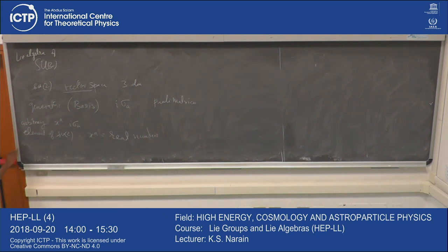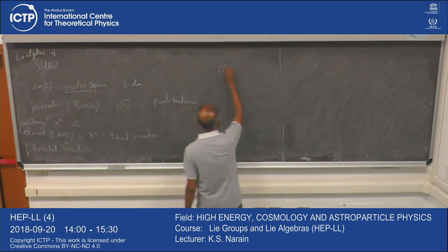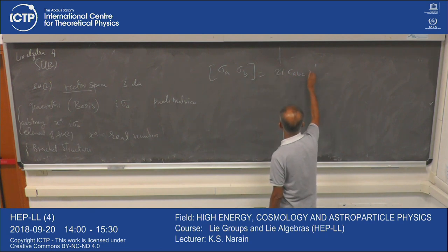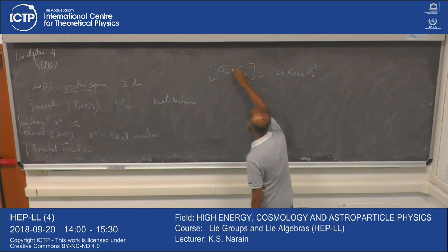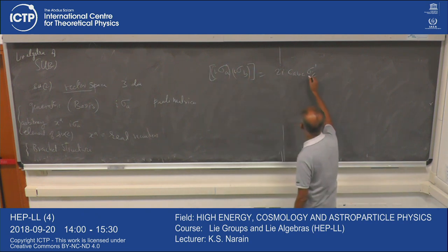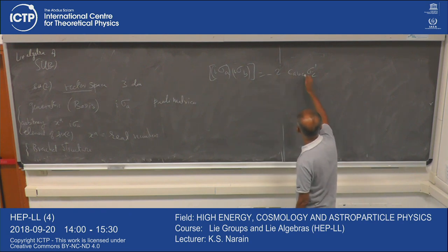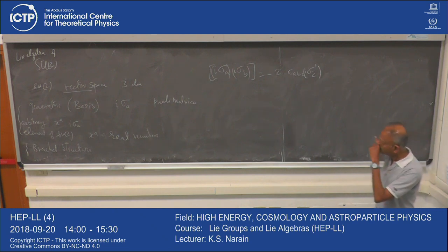Now this was, of course, a vector space. But what was very important was the bracket structure. We saw the bracket structure: [σ_A, σ_B] — the commutator — was 2i ε_{ABC} σ_C. If you put i's in front, i σ_A and i σ_B, then i squared is minus, so you get a minus sign out front.